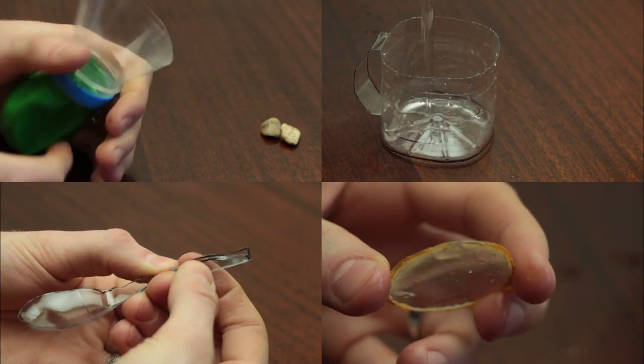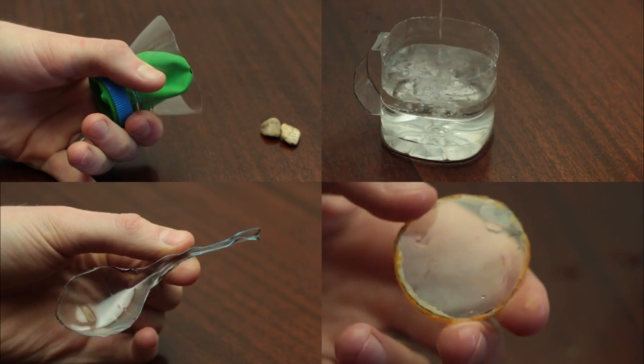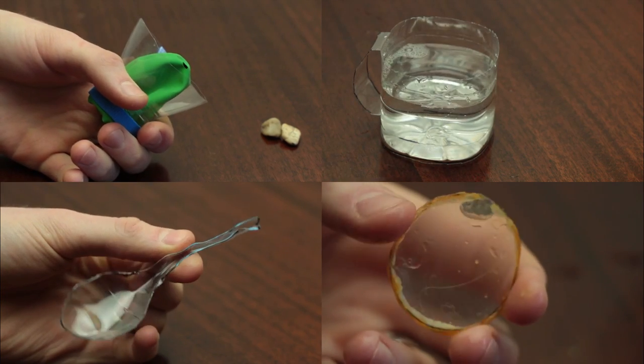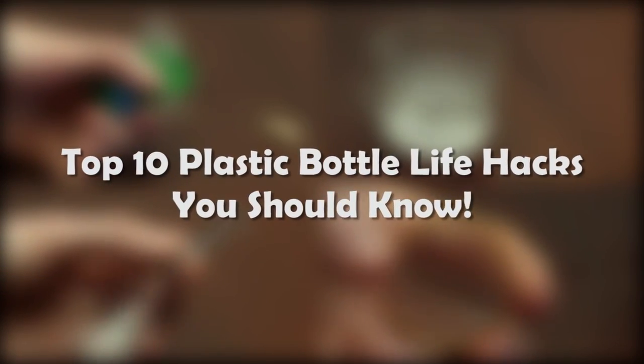From a pocket slingshot to camping utensils and a magnifying glass, plastic bottles are extremely versatile items and you'll be amazed by these top 10 plastic bottle life hacks we'll be revealing in this video.